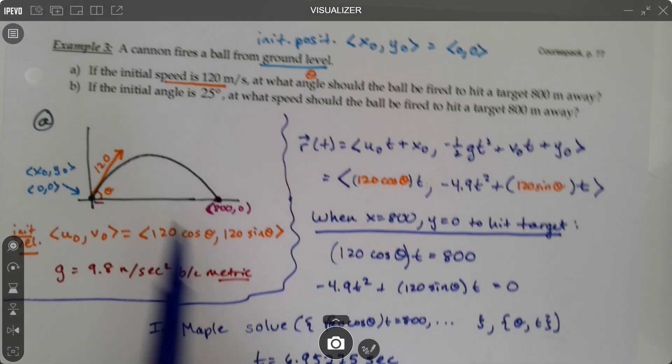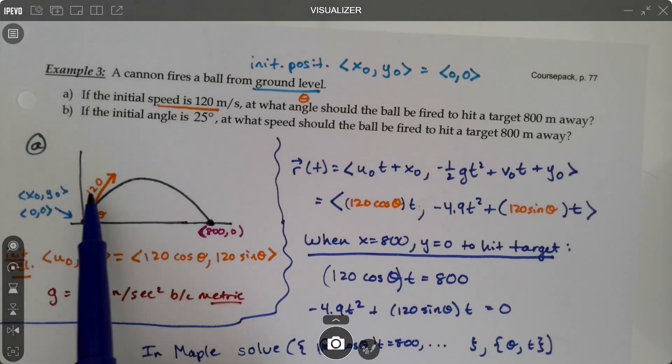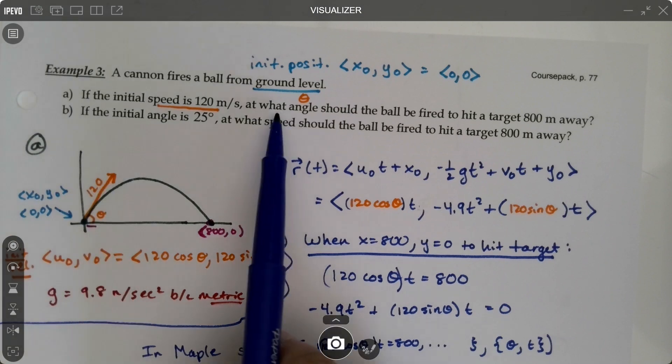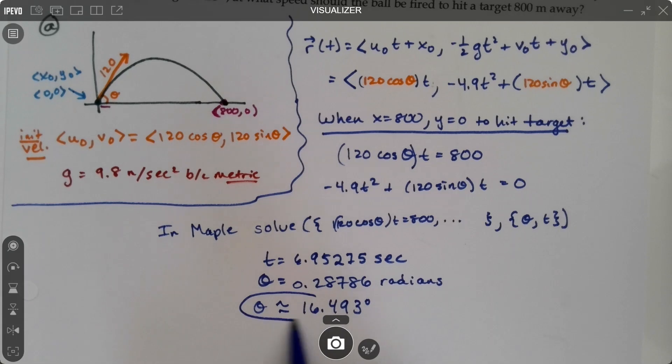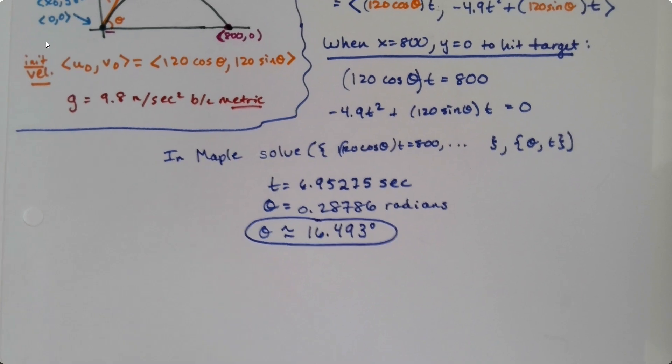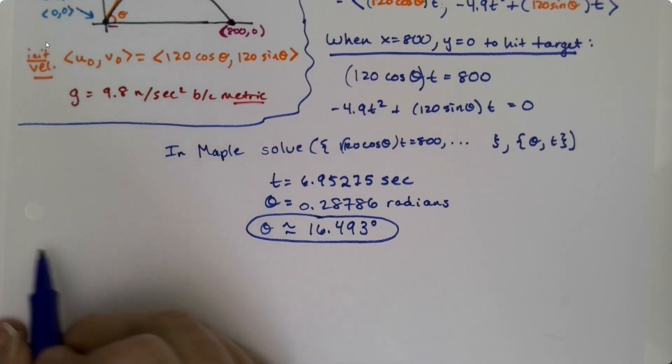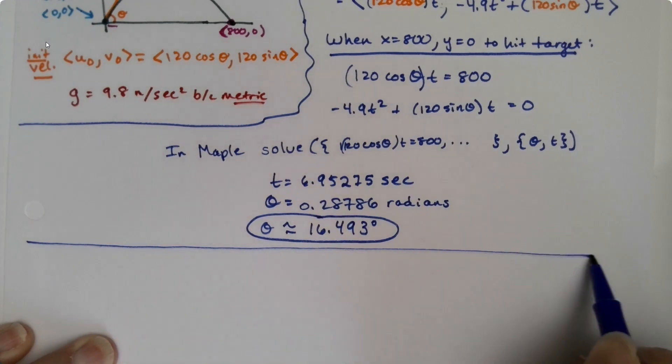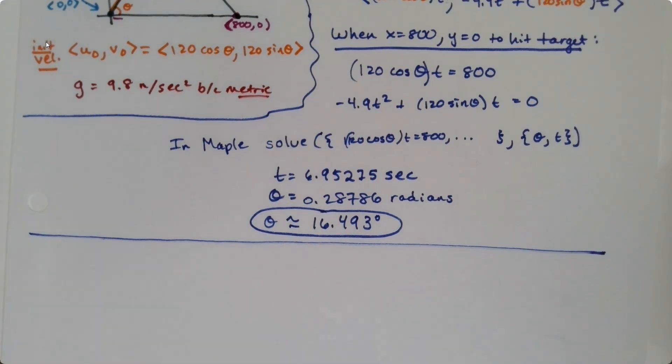So this was the answer to their question. It says, if the initial speed is 120 meters per second, at what angle does it need to be fired? And there it is. There's the angle. So that's part A done. So let's put a big line in the middle of the paper. And let's do part B.